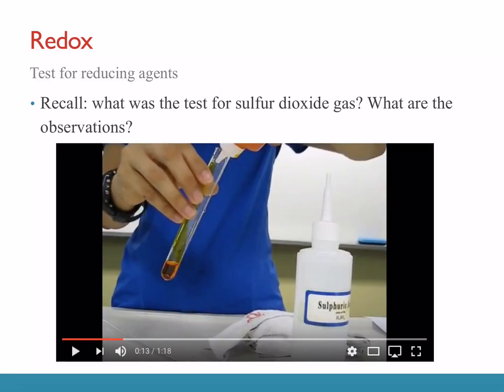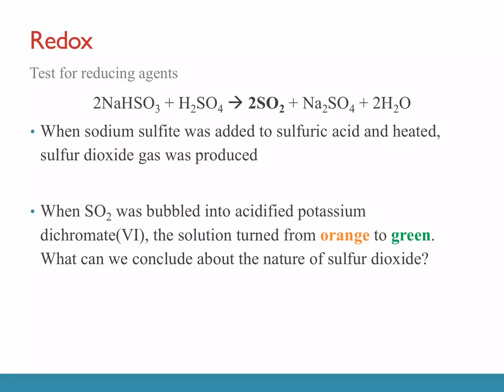So the observation is: sodium sulfide added to sulfuric acid (or HCl) and heated produces sulfur dioxide gas. When sulfur dioxide gas is bubbled into acidified potassium dichromate, it turns from orange to green. What can we conclude about the nature of sulfur dioxide? The orange-to-green color change should be familiar from your transition metals chapter — Cr₂O₇²⁻ is orange, and the chromium ion that is green is Cr³⁺.